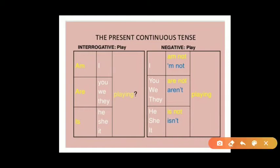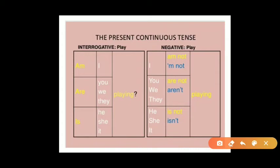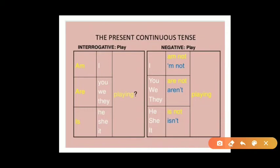Now let's see the negative structure using the verb 'play'. After the helping verb you put 'not': 'I am not playing', 'You are not playing', 'We are not playing', 'They are not playing', 'He is not playing', 'She isn't playing', 'It isn't playing.' The contracted forms are: 'aren't' and 'isn't'. In the negative structure you put 'not' after the auxiliary verbs — 'am', 'are', 'is' — which are the helping verbs of this tense.